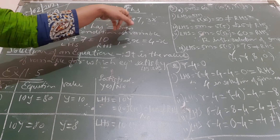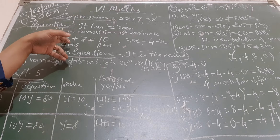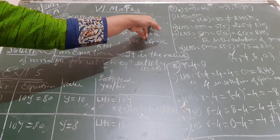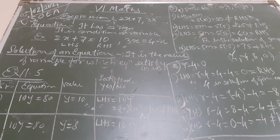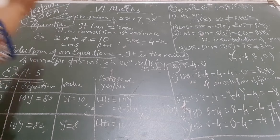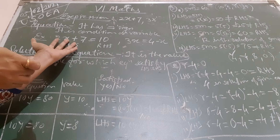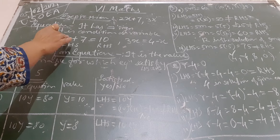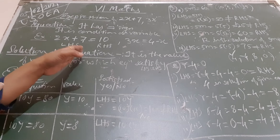For example, if we have written just one side, that is called an expression — it will have only one side. But if you write this is equal to 10, or this expression is equal to another expression like 4 minus x, that is called an equation. As it is an equation, it will have an equal to sign, and because of the equal to sign it will have two sides — the left hand side and the right hand side.